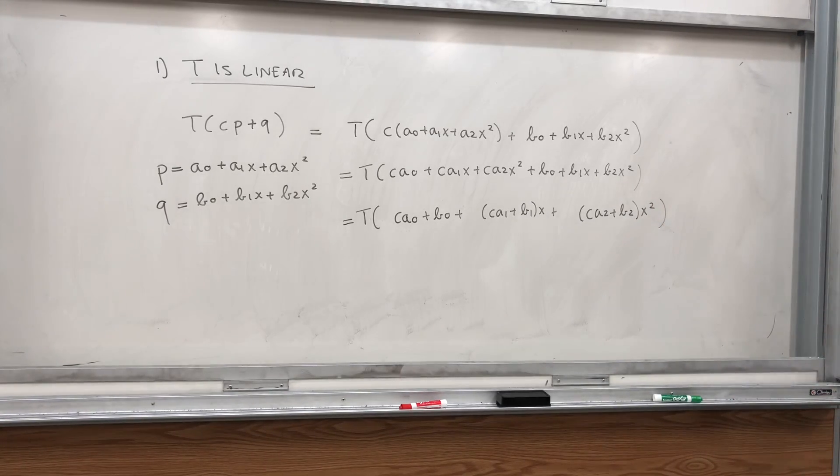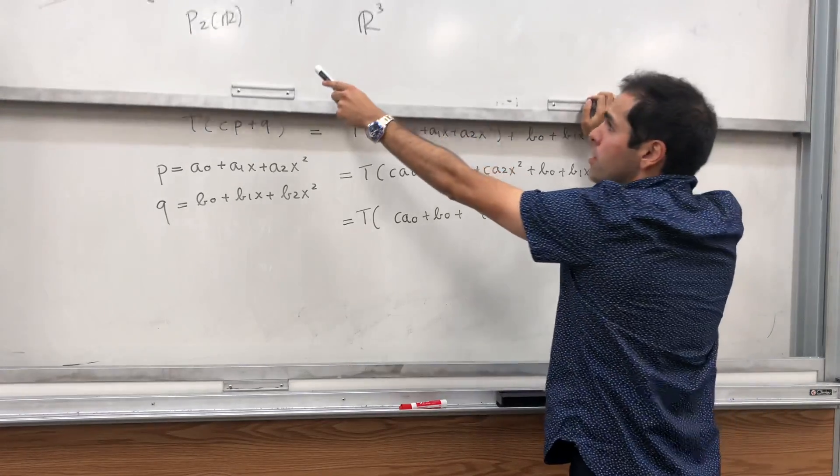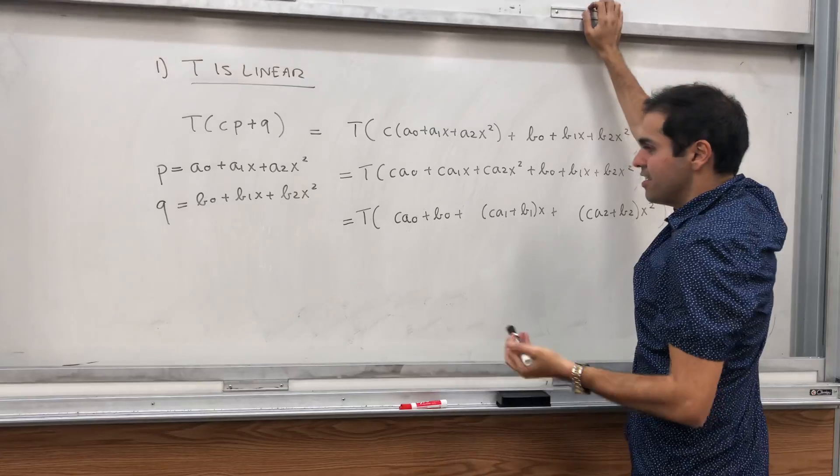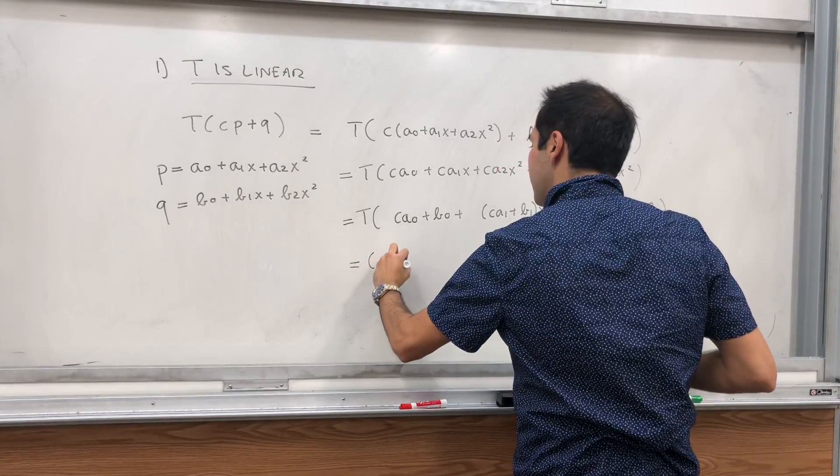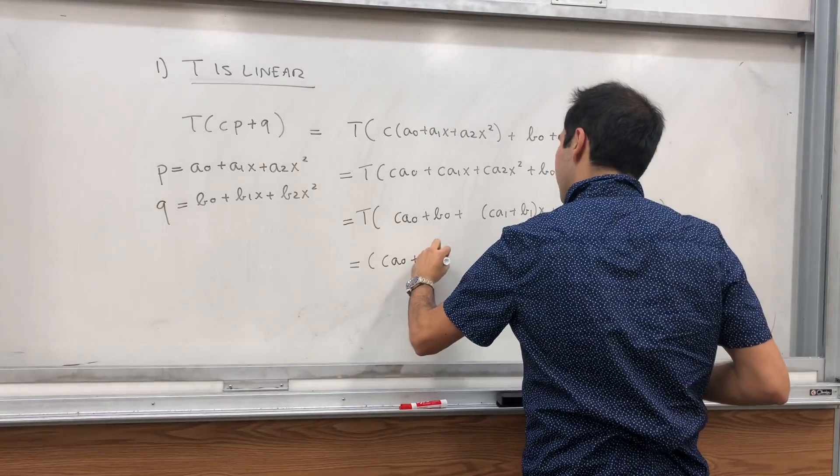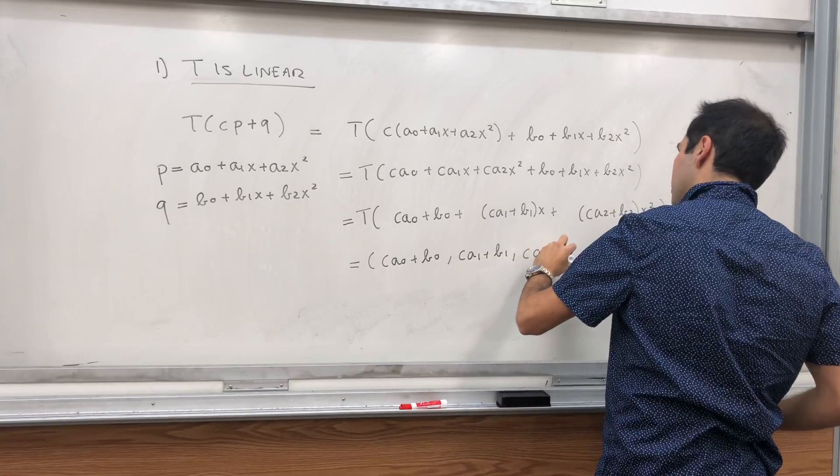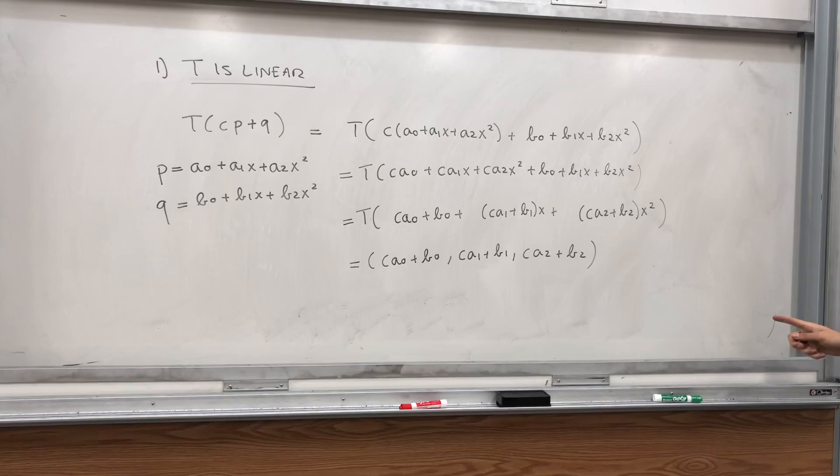And now remember the definition of T. It takes a polynomial as its input and just spits out the vector of coefficients. So by definition of T, that should be (Ca0 plus b0, Ca1 plus b1, Ca2 plus b2). That's just the definition of T.